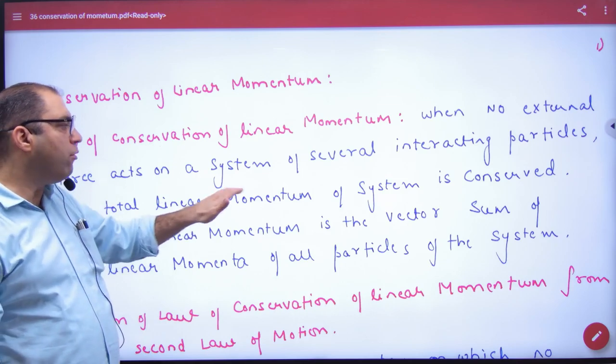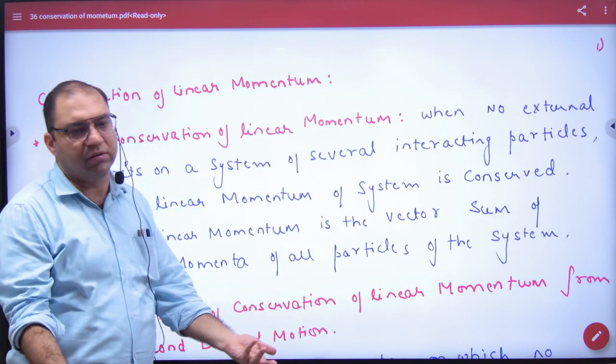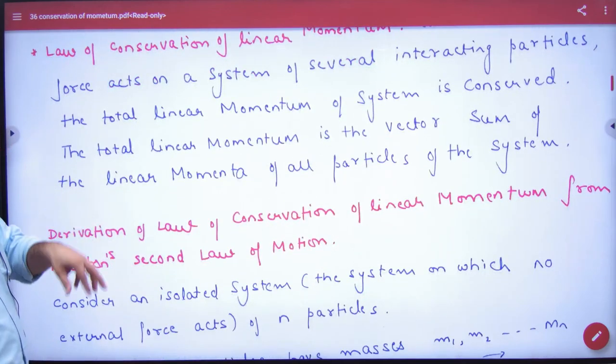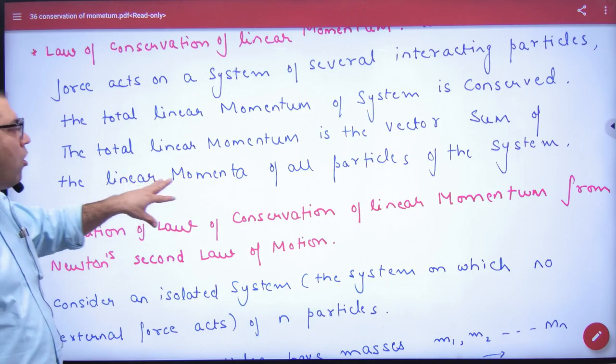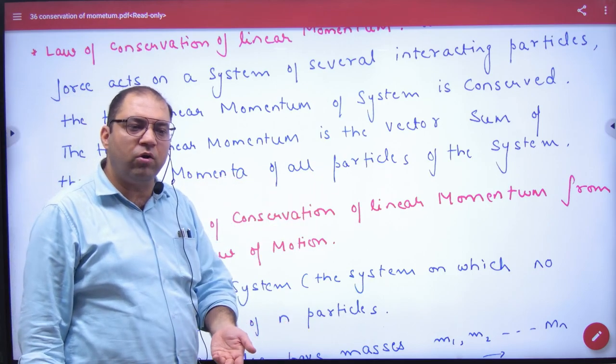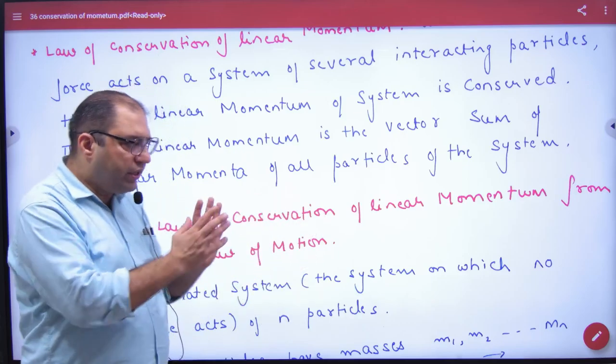then the total linear momentum of a system is conserved. We have discussed this. The total momentum will remain constant. And the total momentum will be the vector sum of all linear momentum of all the particles of a system. So what will the total momentum be? All the particles are sum.